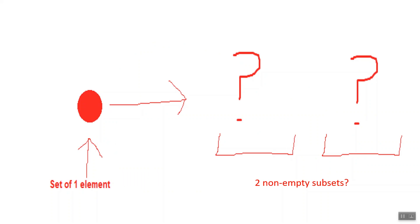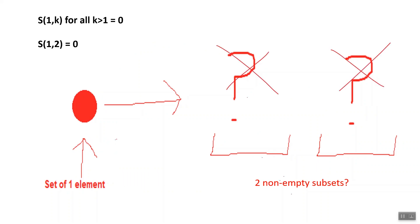Can we partition our set of one element into two non-empty subsets? No. We can never partition a set of n elements into more non-empty subsets than the number of elements we have in our set. So S(1,2) equals 0, because there are 0 ways to do this. And in fact, S(1,k) for all k greater than 1 is also equal to 0.